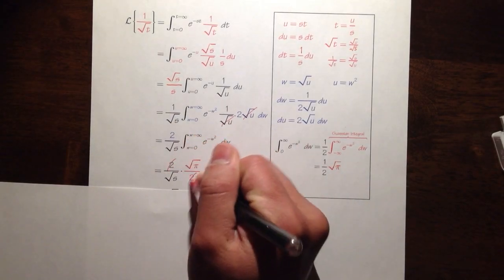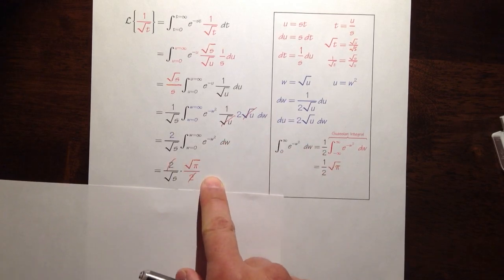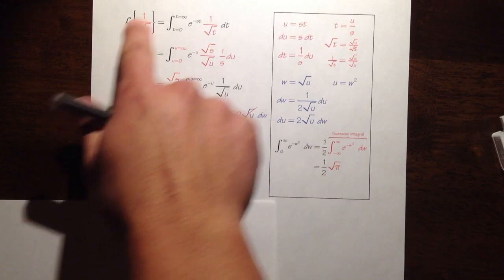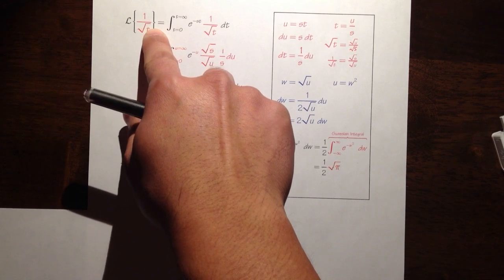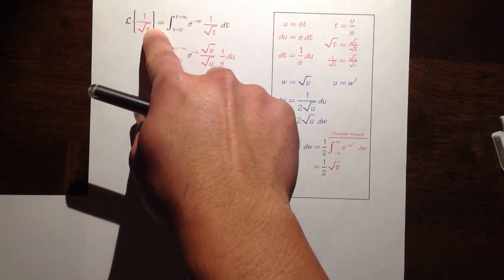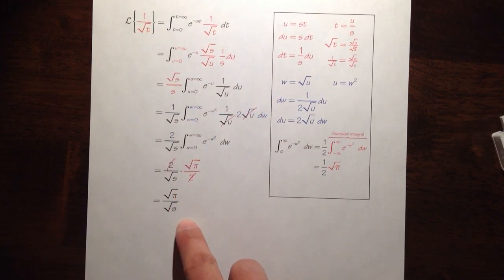And finally, as you can see, we can cancel out the 2. That means the Laplace transform of 1 over square root of t is equal to square root of pi over square root of s. And we're done.